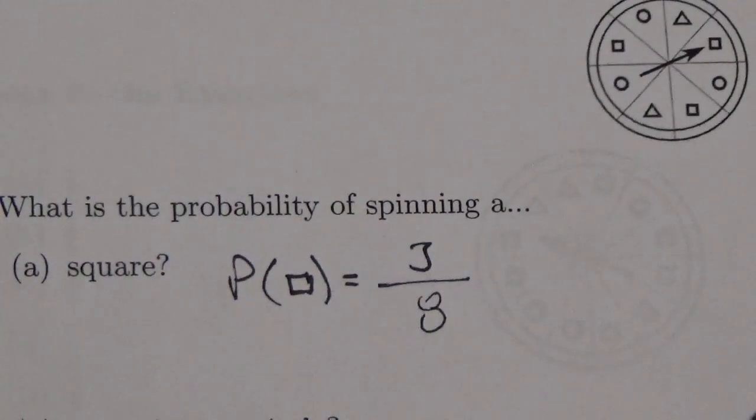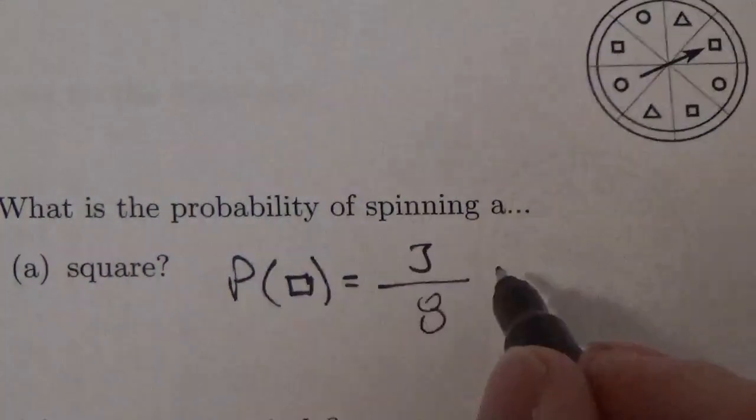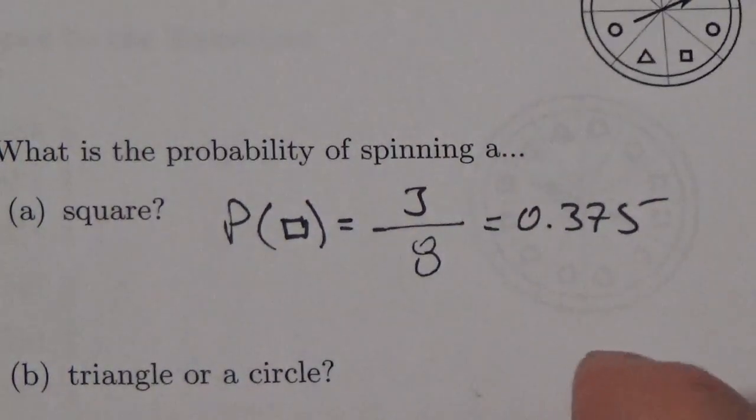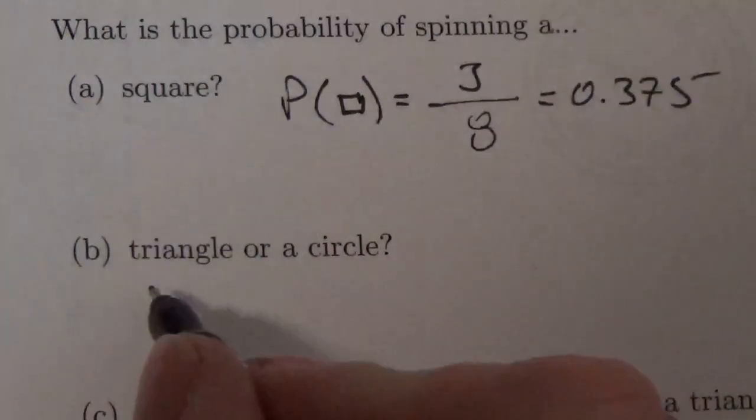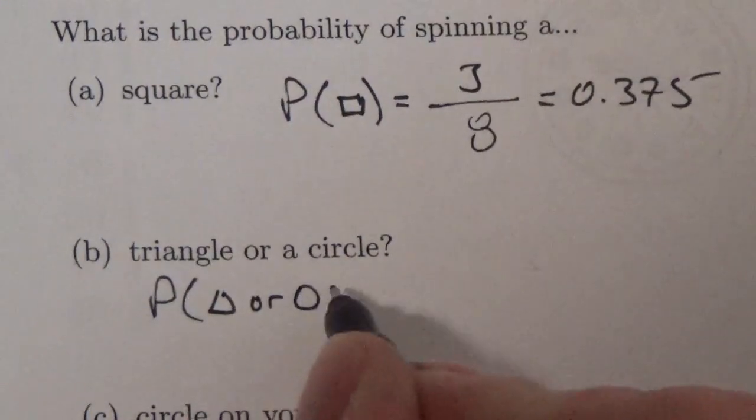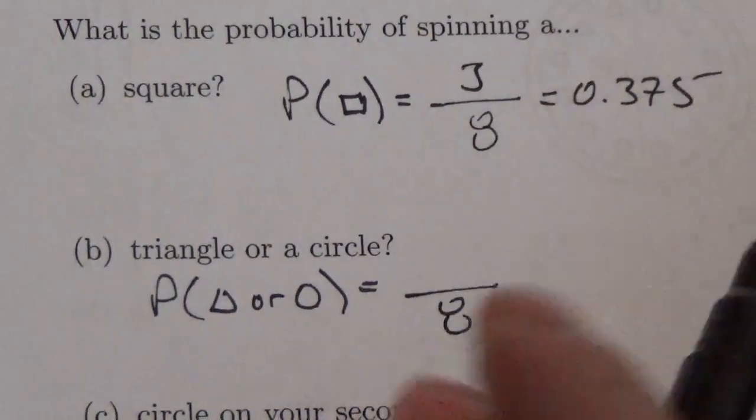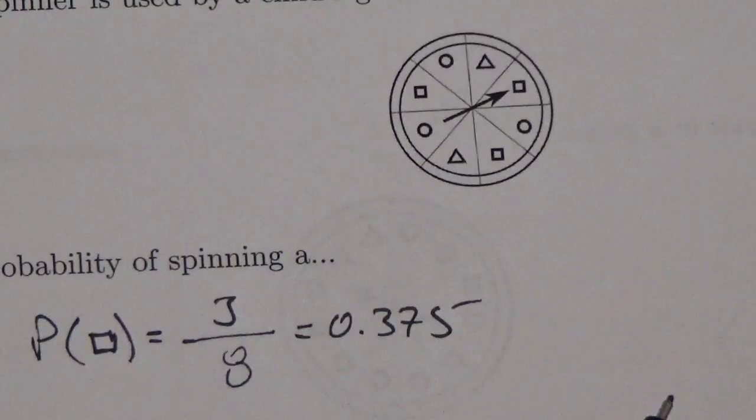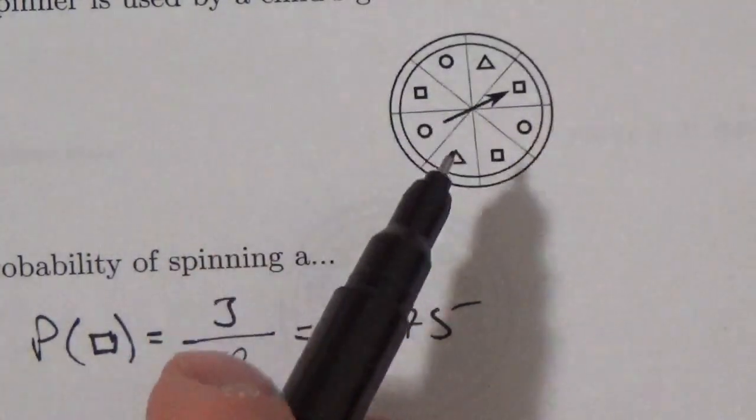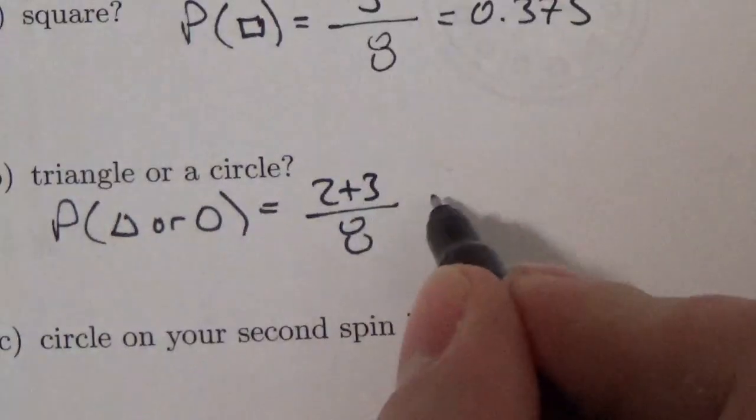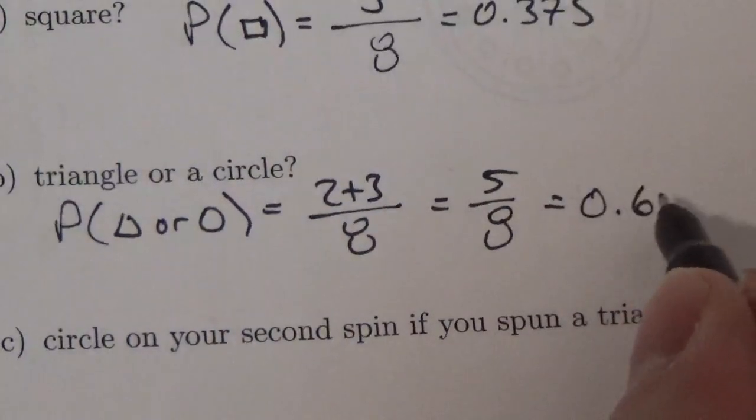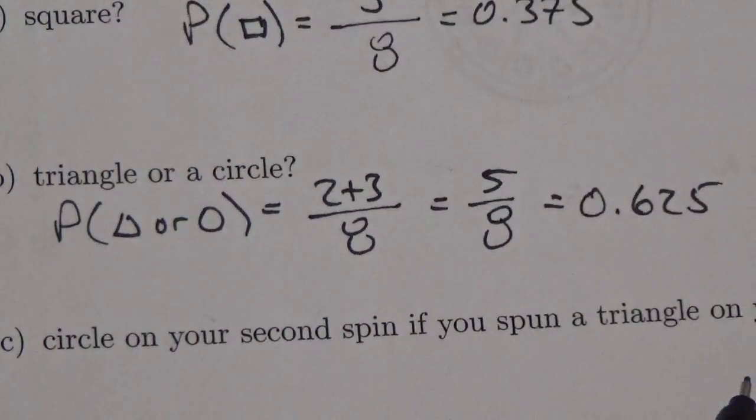If that doesn't communicate something to you, you might want to write this as a decimal, 0.375. So roughly there's a 37.5% chance you're going to get a square. What's the probability of getting a triangle or a circle? There are 8 possible outcomes. Remember, 'or' implies addition. A triangle, I've got 2 triangles, and a circle, I've got 3 circles. So that's 2 plus 3 over 8, which is 5 over 8 or 62.5%.